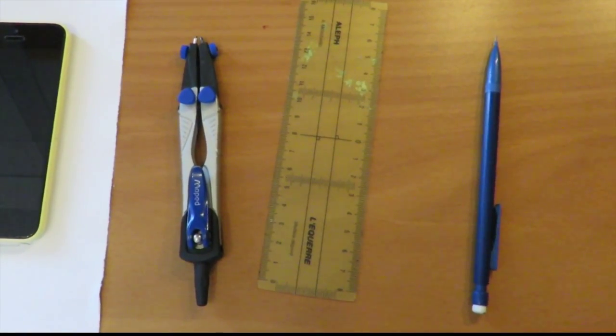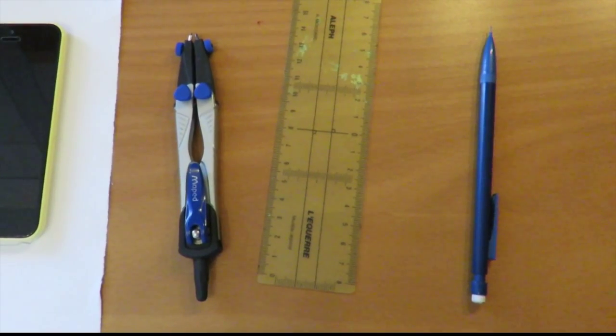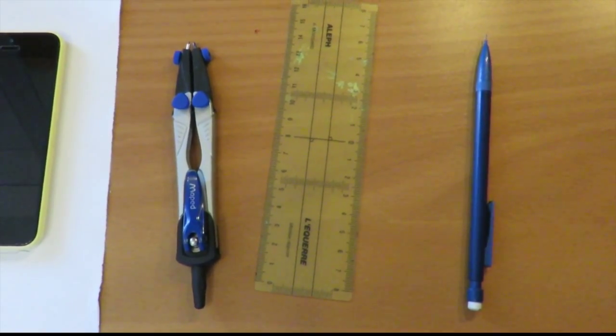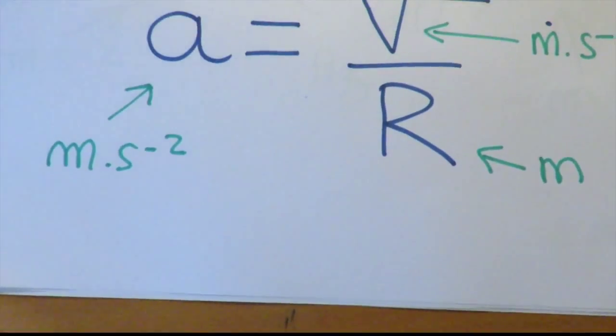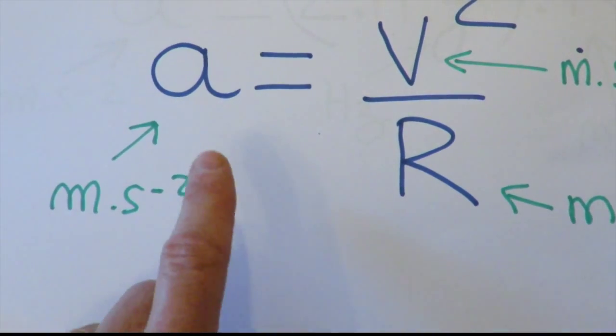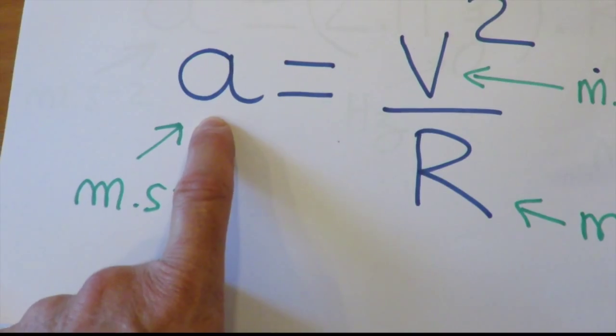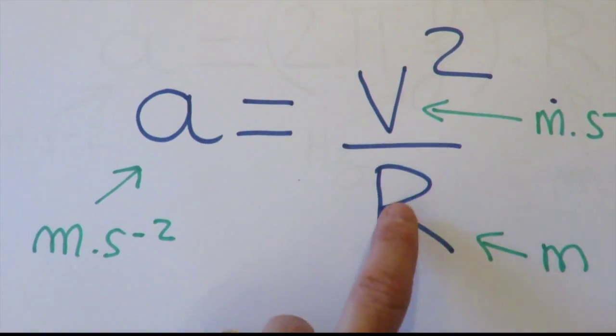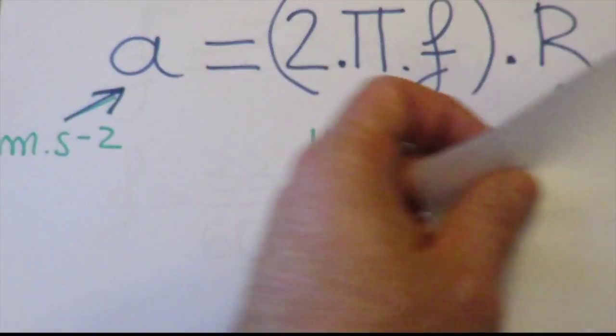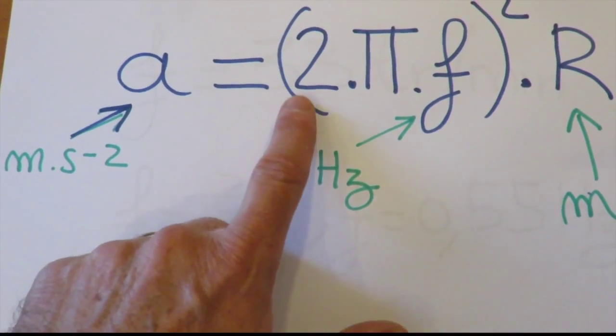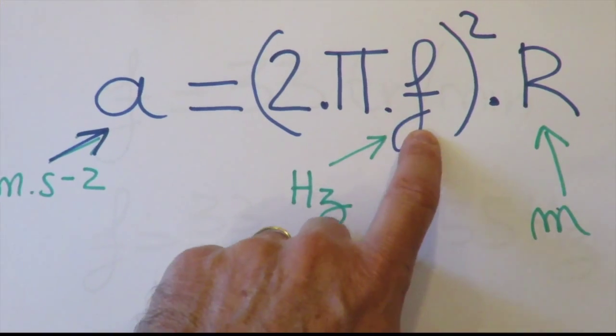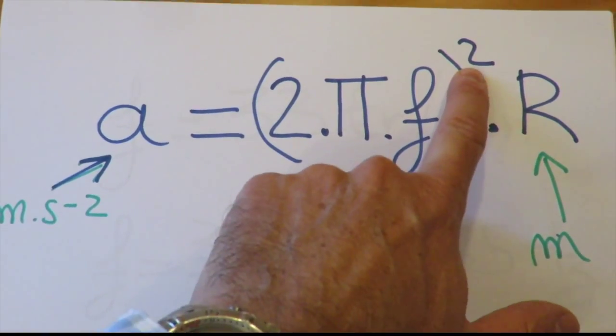And for this, you have to use the properties of the circular motion, and for the properties about the circular motion when it is uniform. When it is uniform, the acceleration, the radial acceleration, is equal to V squared divided by R. So it's mean also that here, the acceleration here is equal to 2 times pi times F, all of that is square, times R.